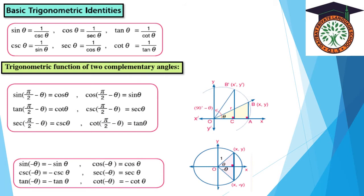Even and odd function identities: sin(-z) = -sin z; cos(-z) = cos z; sec(-z) = sec z; tan(-z) = -tan z; cot(-z) = -cot z.